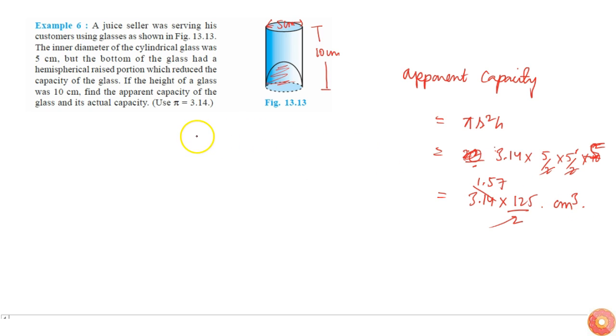But actual capacity will be equal to apparent capacity minus the volume of this hemisphere which is kept inside it. So the volume of this hemisphere will be simply 2/3 πr³, where r is 5/2.